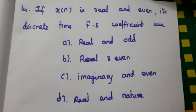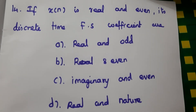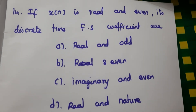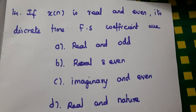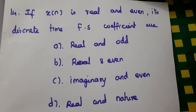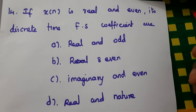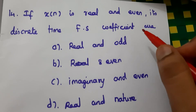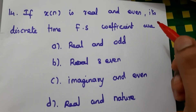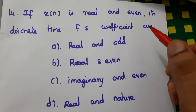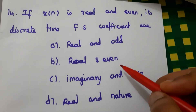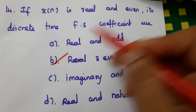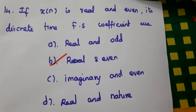Fourteenth question: if x(n) is real and even, its discrete-time Fourier series coefficient is also real and even. So here the answer is B.